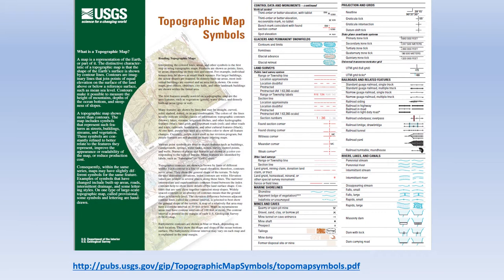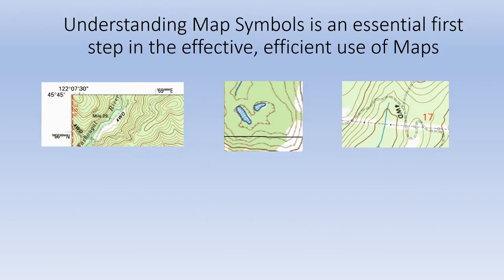This legend is specifically applicable to the USGS 7.5-minute series topographic maps, which cover the entire US, have been in production for many decades, and which arguably provide the foundation for all topographic maps used in search and rescue. This video highlights major categories of map symbols and illustrates the symbols commonly encountered in search and rescue operations.